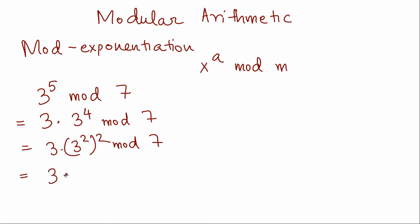3 squared is 9, so 9 is the same as 2 mod 7. And so we see that just after a couple of steps of repeated squaring we get the answer, which is 5 mod 7. This was a very easy example of mod exponentiation.